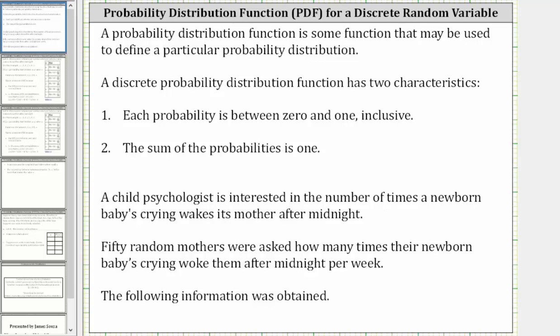A probability distribution function is some function that may be used to define a particular probability distribution. A discrete probability distribution function has two characteristics. Number one, each probability is between zero and one inclusive, meaning the probabilities do include zero and one. And number two, the sum of all the probabilities is equal to one.